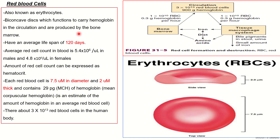Last time we talked about plasma; today we are going to talk about red blood cells or erythrocytes. These are disc-shaped cells with a diameter of 7.5 micrometers and a thickness of 2 micrometers. They are made in the bone marrow and their main function is to carry hemoglobin.